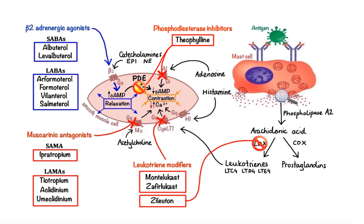Another drug similar to theophylline, called roflumilast, also inhibits phosphodiesterase. However, it does so in a selective manner by selectively targeting phosphodiesterase-4, PDE-4 for short. Because phosphodiesterase-4 is the primary enzyme involved in metabolism of cyclic AMP in smooth muscle, selective inhibition of PDE-4 by roflumilast results in better therapeutic efficacy and improved safety profile when compared to theophylline.